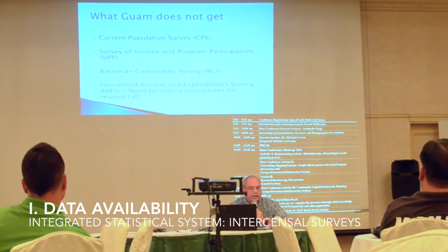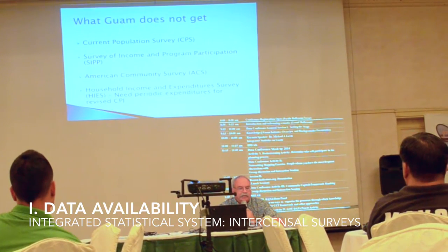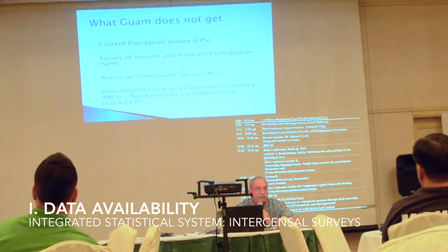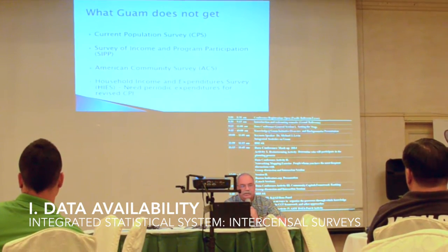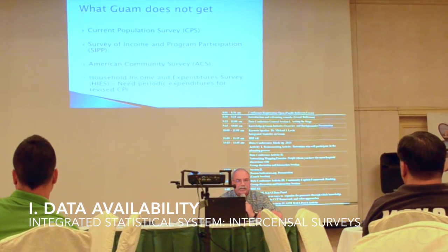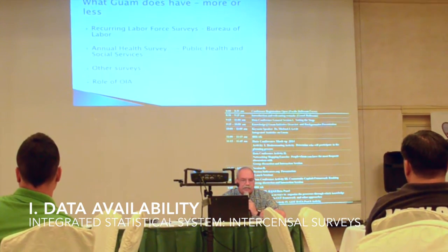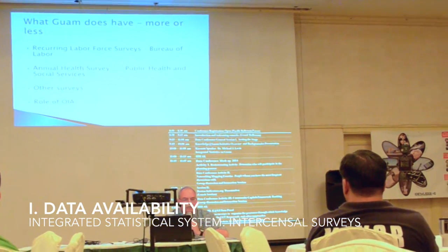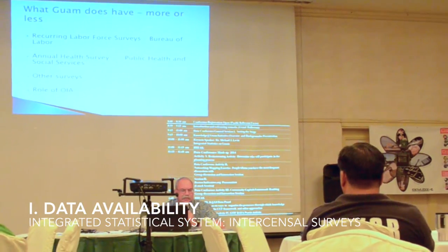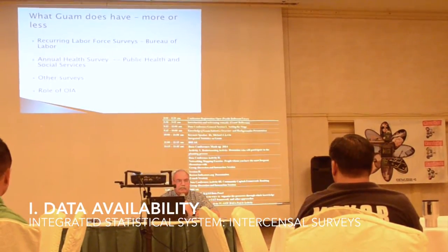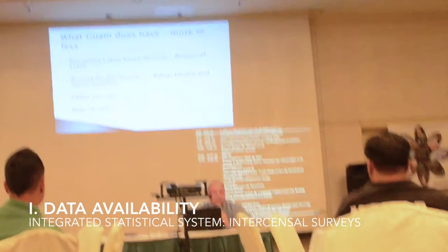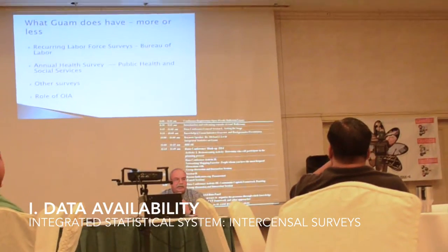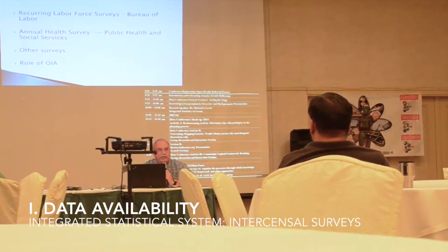You also lack the household income and expenditure survey. You need periodic expenditure data to revise your CPI. The last income and expenditure survey was 2005. Things have changed since then, but your consumer price index remains the same because it's only adjusted when you have an income and expenditure survey. However, you do have recurring labor force surveys. There was a time in the 70s through 90s when it was done quarterly — now it's once a year, which is not a good thing.